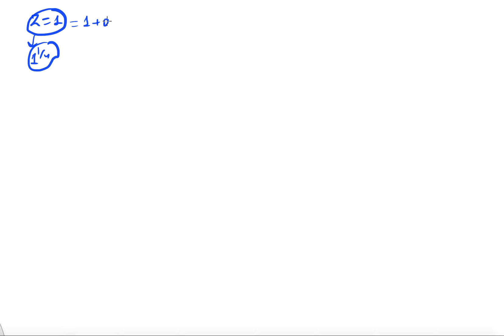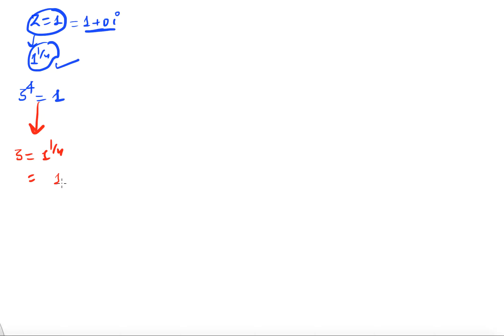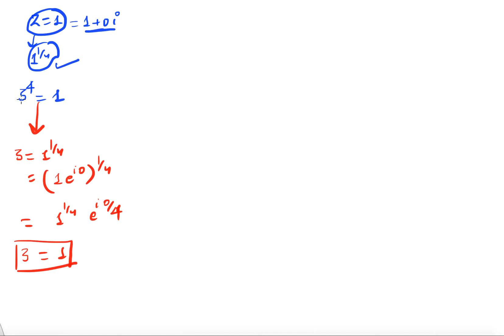Let us start with z = 1 and compute the fourth root: 1^(1/4). Since 1 is a complex number, I can write it as 1 + 0i. So I want ζ such that ζ^4 = 1. One way is to write ζ = 1^(1/4) in polar form, giving ζ = 1 — and we know ζ = 1 satisfies this equation.